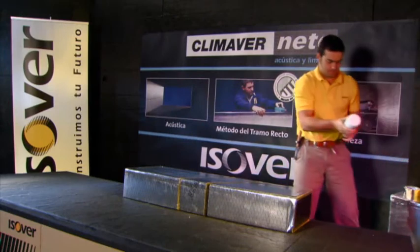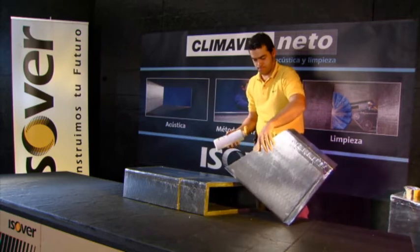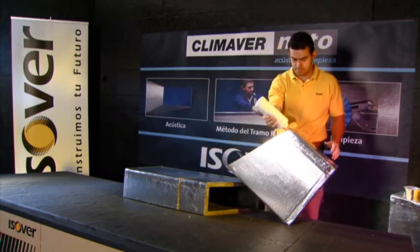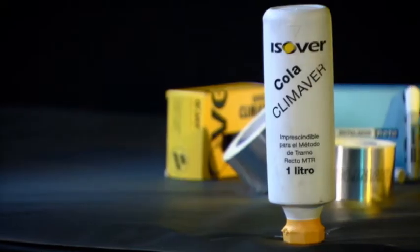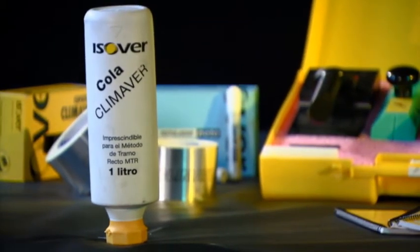KlimaVair glue is an acrylic resin-based adhesive especially designed for glass wool applications. It is odourless, non-toxic and non-flammable. It is supplied in one-litre bottles and is used to internally seal duct assemblies such as elbows.